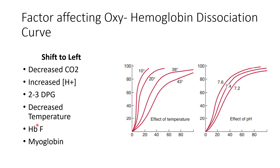Two additional factors shift the curve to the left: fetal hemoglobin (HbF) and myoglobin. Fetal hemoglobin has a higher affinity for oxygen compared to adult HbA, so its curve is shifted to the left — meaning more oxygen loading but less oxygen supplied to tissues. The same applies to myoglobin, which is the heme-containing protein in muscles. Whenever myoglobin is present, the curve also shifts to the left.